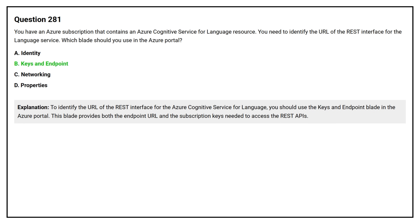To identify the URL of the REST interface for the Azure Cognitive Service for Language, you should use the Keys and Endpoint blade in the Azure portal. This blade provides both the endpoint URL and the subscription keys needed to access the REST APIs.